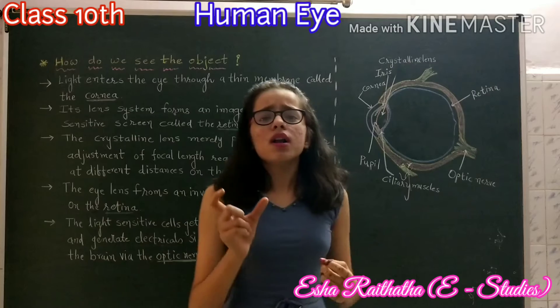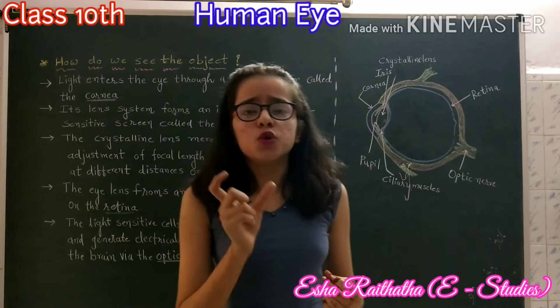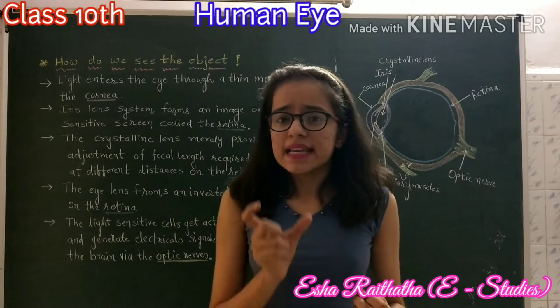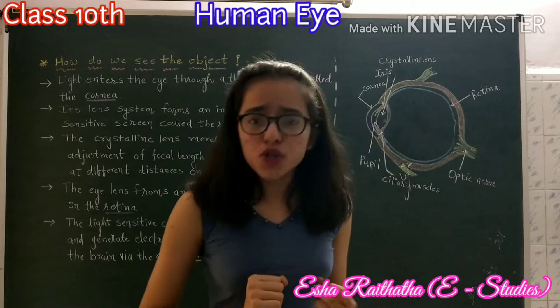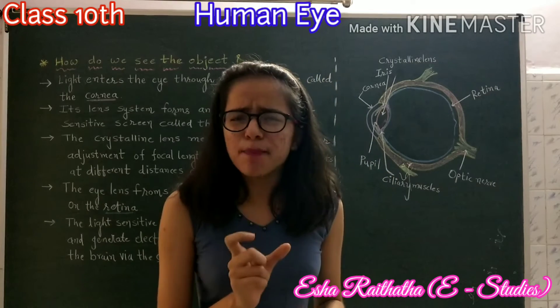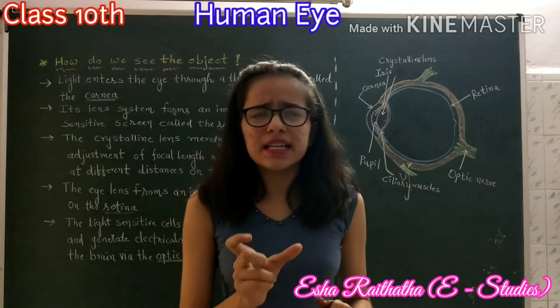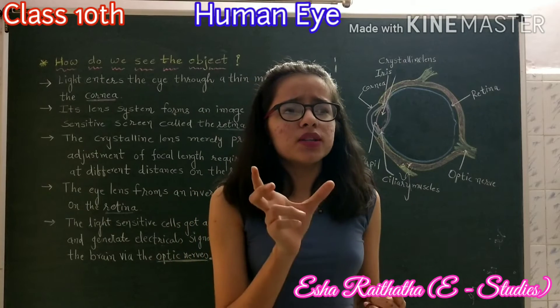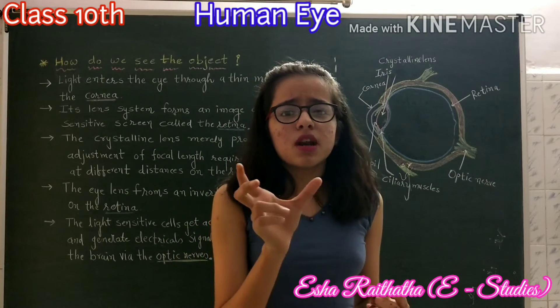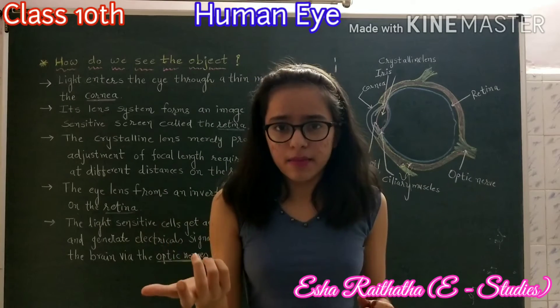The eyeball of a human eye is spherical in shape and is approximately 2.3 cm in diameter.